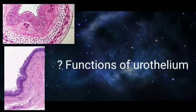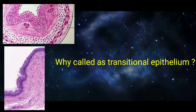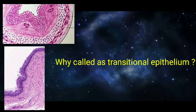This lining epithelium is called transitional epithelium because it can change shape according to the stretched or relaxed stage. If stretched, it becomes stratified squamous epithelium, and if relaxed, it remains transitional epithelium or urothelium.